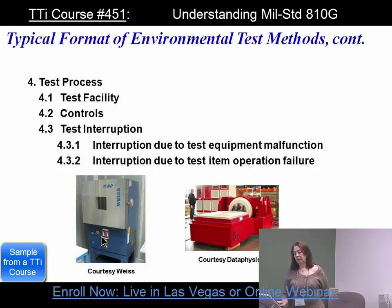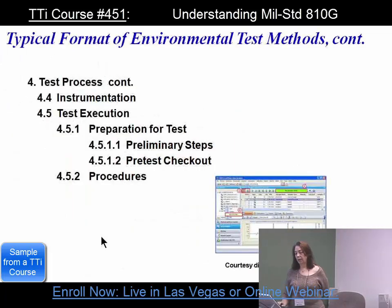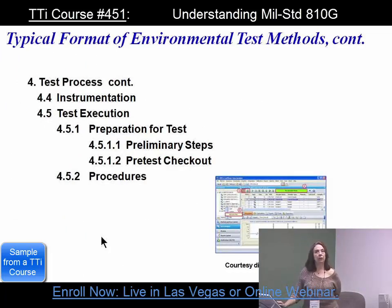Any test interruption, whether due to equipment malfunction or test item operation, must be documented. The test process also includes any instrumentation used — including extra instrumentation such as data acquisition units and anything else used to keep track of what's going on.